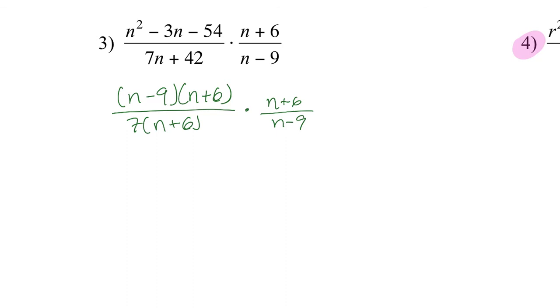That means that on this case, I can cancel just one n plus 6, because I only have one on the denominator to cancel with, and then I can cancel out the n minus 9. So at the end, this equals n plus 6 over 7.